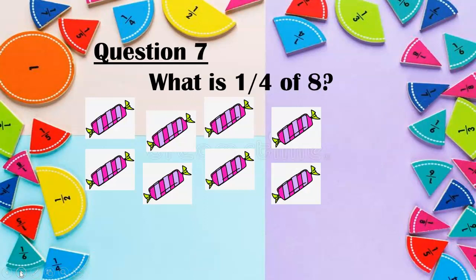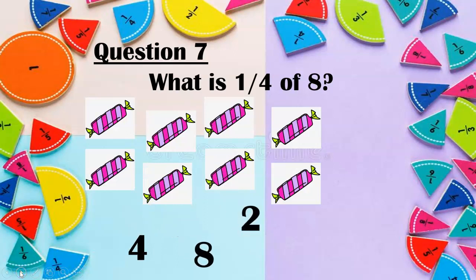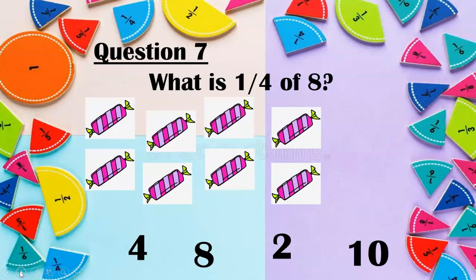Question seven. What is one quarter of eight? This time it's four equal groups. Is it four? Is it eight? Is it two? Or is it ten? Don't forget, you can pause the video. How many fours in eight? It's not four and it's not eight. That's right, it's two. There are two fours in eight, so if we split eight into four we will get two sweets each.